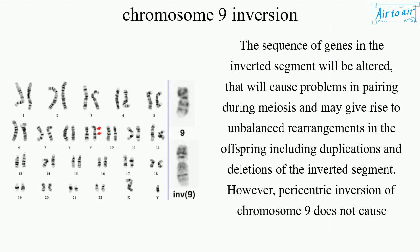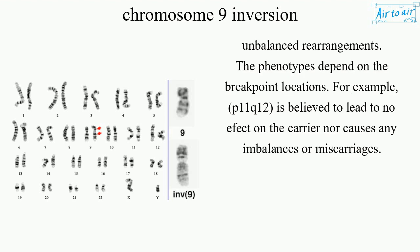The sequence of genes in the inverted segment will be altered, which will cause problems in pairing during meiosis and may give rise to unbalanced rearrangements in the offspring, including duplications and deletions of the inverted segment. However, paracentric inversion of chromosome 9 does not cause unbalanced rearrangements.